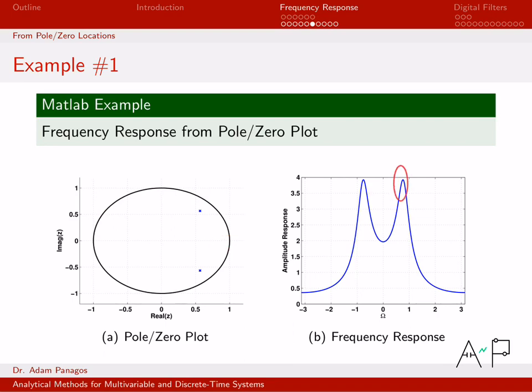As I get close to poles, I get peaks. As I get close to zeros, I get zeros. So that's a very simple example here with only two poles.